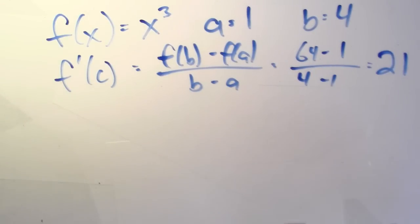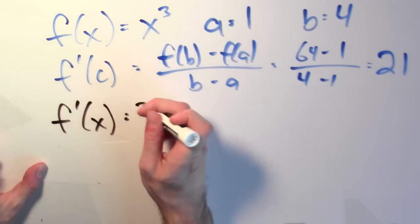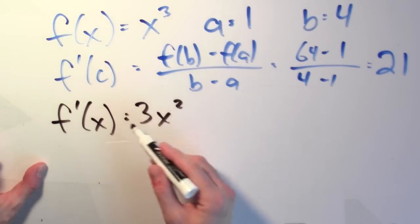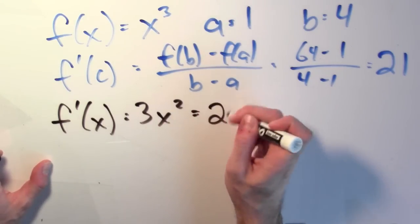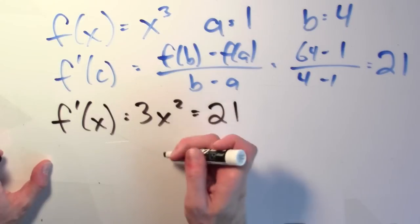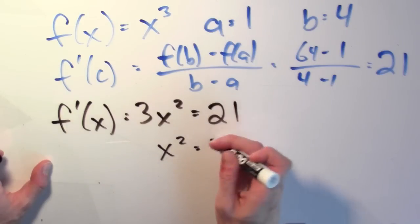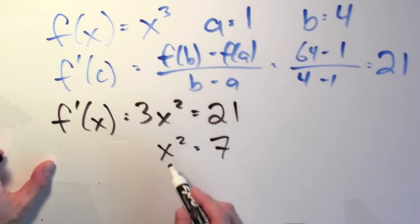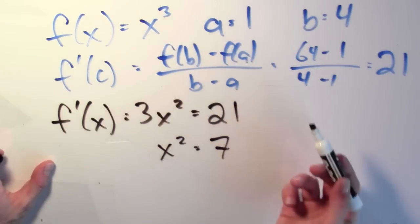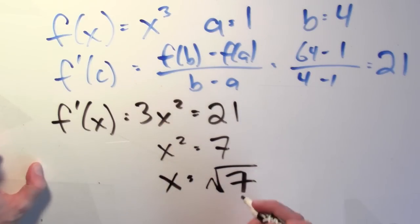Can I do that? Yes — I just need to differentiate the function. The derivative of x cubed is 3x squared. I'm looking for which value of x makes that equal to 21. Dividing both sides by 3, I need x squared to equal 7. And since x should be between a and b, x is the positive square root of 7.